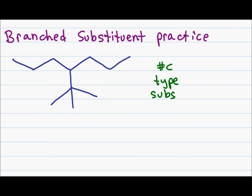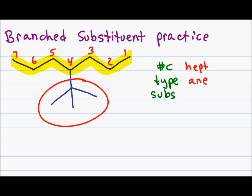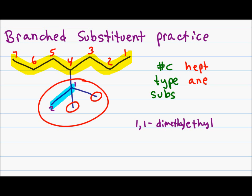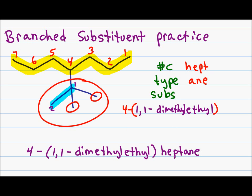Let's do one final example of naming branched substituents the long way. I have seven carbons in my parent chain giving me hept, and only single bonds giving me ane. This branched substituent has two carbons directly connected to the parent chain plus two methyl groups coming off that first carbon. Numbering starts at the carbon attached to the parent chain; two carbons gives ethyl. Coming off carbon one I have two methyl groups — 1,1-dimethyl. Since all of this is on carbon four, the final name is 4-(1,1-dimethylethyl)heptane.